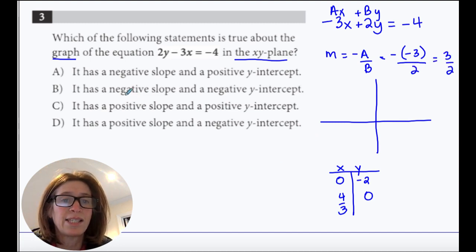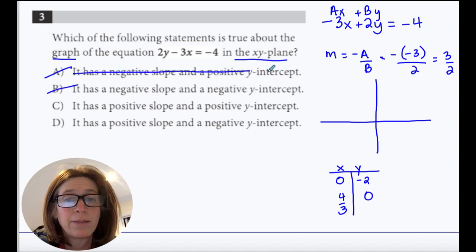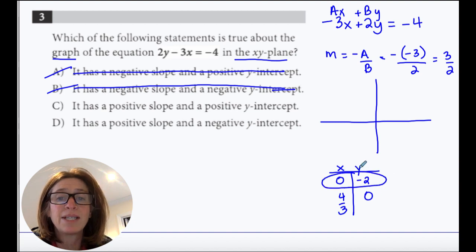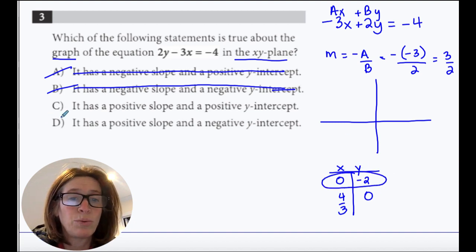So I'm going to go through my slopes first. It says it has a negative slope. Well, my slope's positive, so a and b are out. Then the only thing I have to see is if it has a positive y-intercept or a negative y-intercept. And you can see here the y-intercept is negative, so my answer would be d.